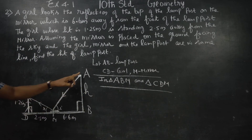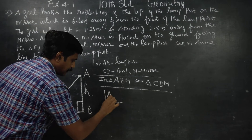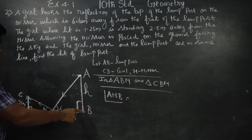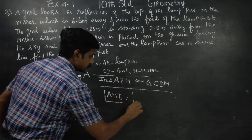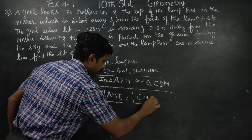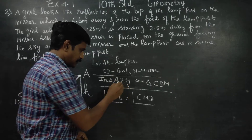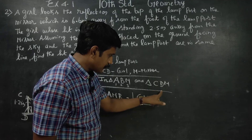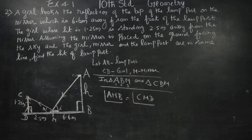First, angle of incidence: angle AMB. And angle of reflection: angle CMD. The angle of incidence is equal to the angle of reflection.